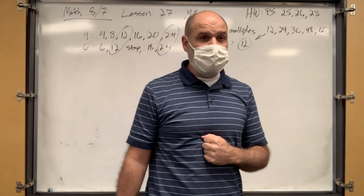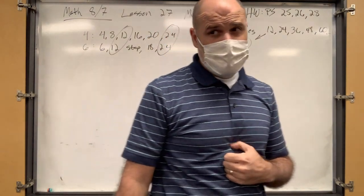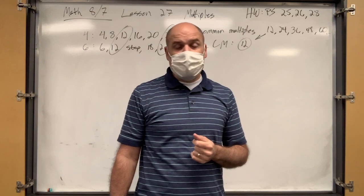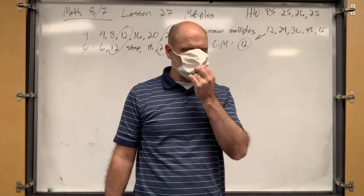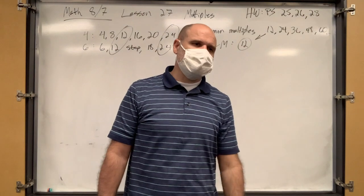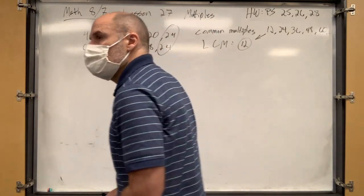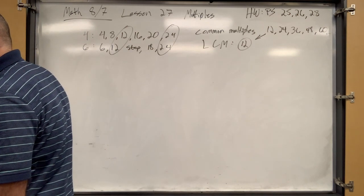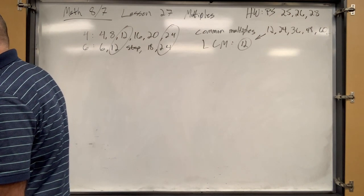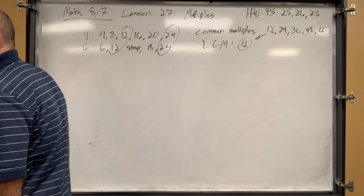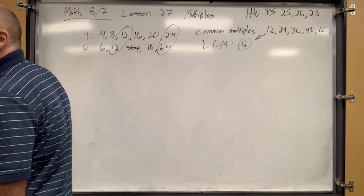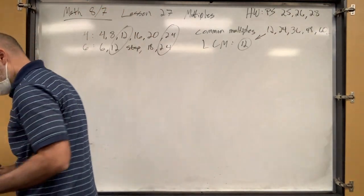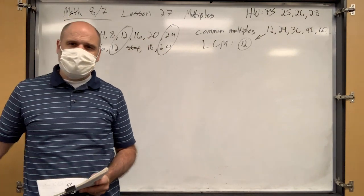What's the next common multiple going to be? 36, 48, 60, and so on. But you're going to be asked to find the least common multiple, which is the least of these — 12. Here's the weird thing: when I think of greatest common factor I think of something big, and when I think of least common multiple I think of something small, but it's the opposite. Greatest common factor gives you small numbers; multiples give you big ones. So least common multiple is actually the smallest of the big numbers, and greatest common factor is the biggest of the little numbers.